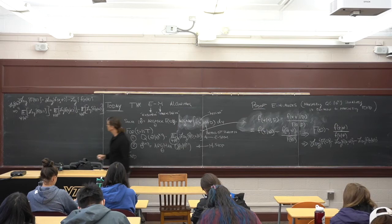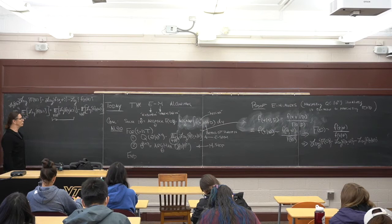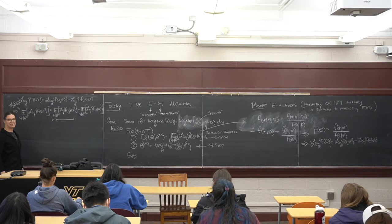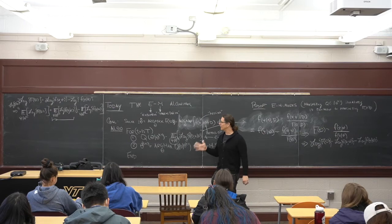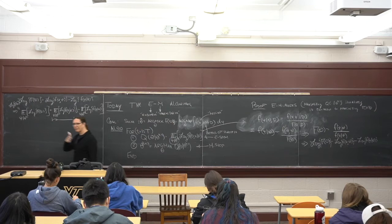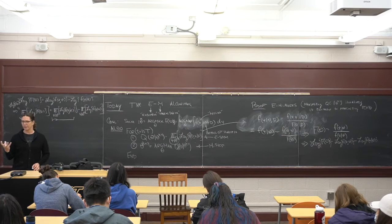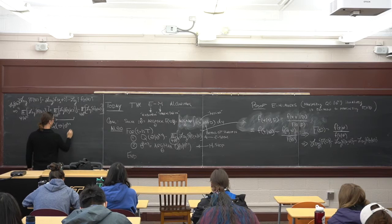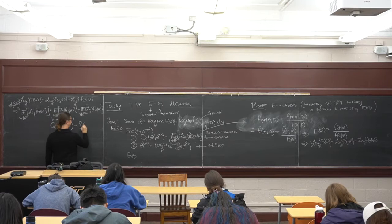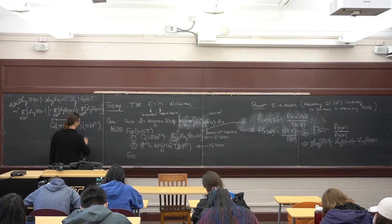Looking at the right-hand side: the expectation of the log joint - that should look familiar - that's Q. So this is Q(theta | theta_T). And subtracting off the other term, I'll call that S(theta | theta_T). So the problem looks different now: log F(theta) equals Q(theta | theta_T) minus S(theta | theta_T). I'm saying that by maximizing Q it's the same as maximizing F(theta). In general for arbitrary functions I can't just grab the positive part and maximize it, because that could inadvertently increase S as well. We need to show something about S.